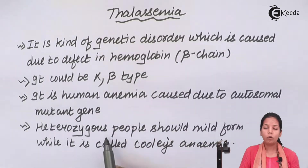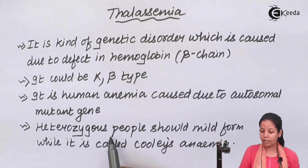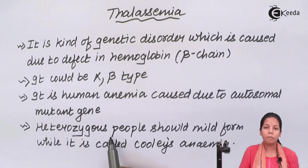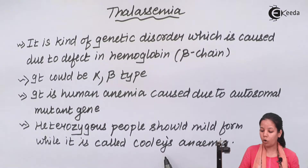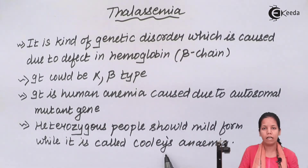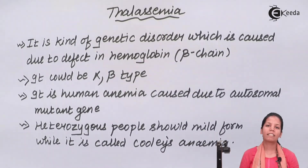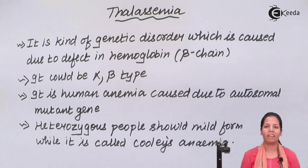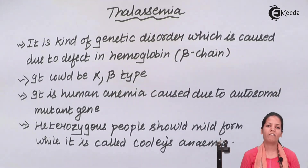People who are heterozygous tend to show a mild form of the disease. The anemia that they have is also called Thalassemia minor. So students, in this part of the chapter we covered thalassemia and how it affects the body. I hope students are very clear with this concept. Thank you.